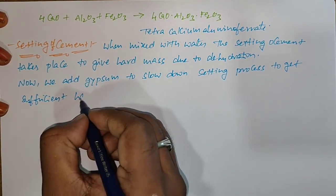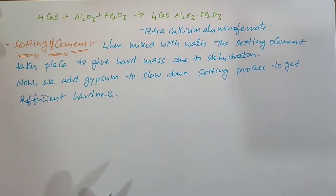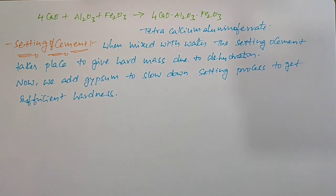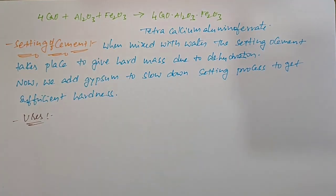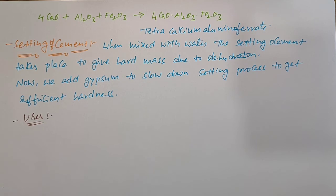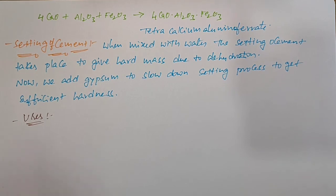This is about the setting of Cement. Now, the uses of Cement: Cement is used in the building industry. It is used for the construction of tunnels, dams, roads, etc. It is also used in making concrete and reinforced concrete.